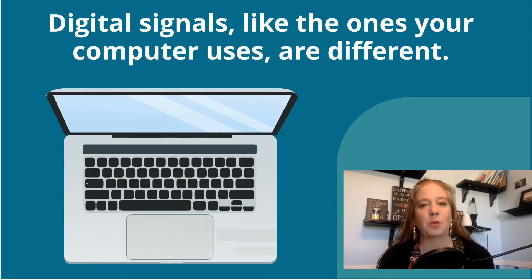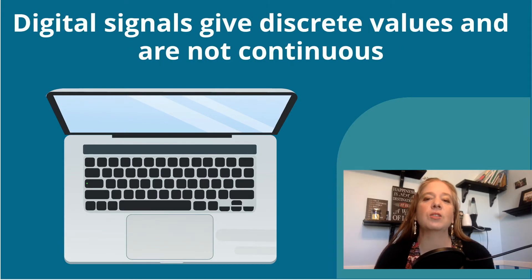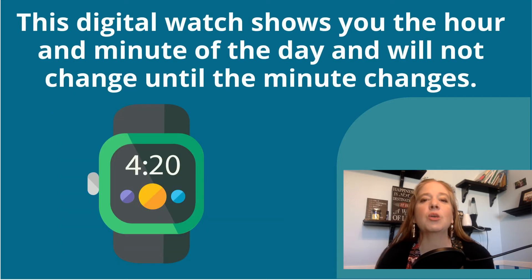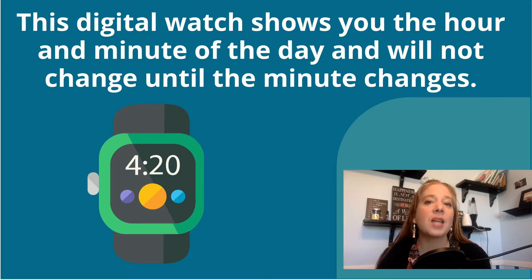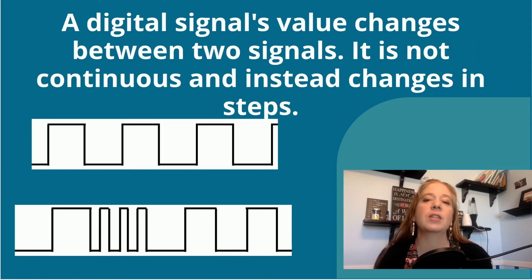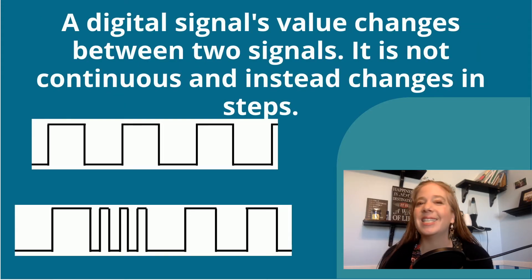Digital signals, like the ones your computer uses, are different. Digital signals give discrete values and are not continuous. This digital watch shows you the hour and minute of the day and will not change until the minute changes. A digital signal's value changes between two signals — it is not continuous and instead changes in steps.